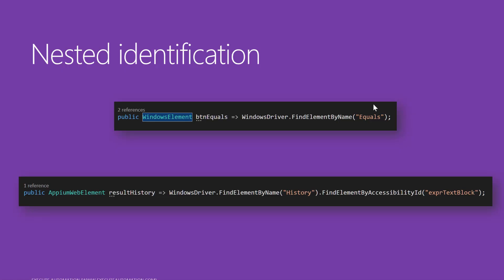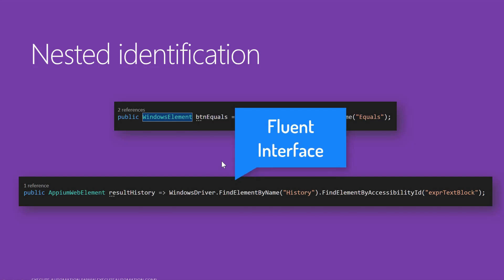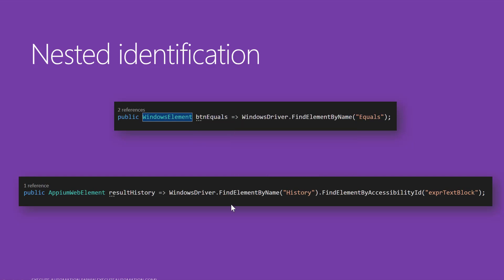Nested identification can be done like this. If you remember from our previous video, we used 'windowsDriver.FindElement(By.Name(...))' to identify Windows elements. But for nested element identification, as covered in earlier videos, we have something called a fluent interface, which helps nest the element identification. You can use 'windowsDriver.FindElement(By.Name(...))' and then chain it to identify the child using its accessibility ID.